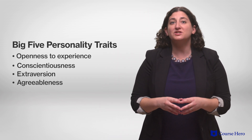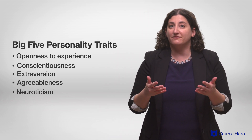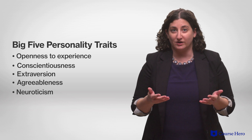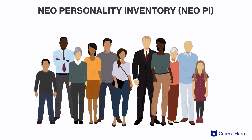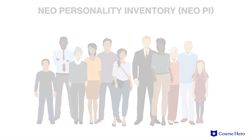One example is the NEO Personality Inventory, or NEOPI, a personality inventory that examines the Big Five personality traits. The NEOPI has been given to a large and representative sample of the population, including individuals of different age ranges, ethnicities, and cultural backgrounds, and scores on this test are consistent over time.